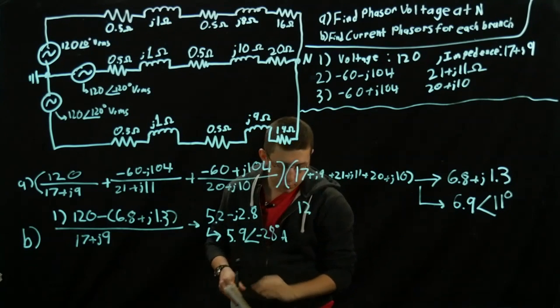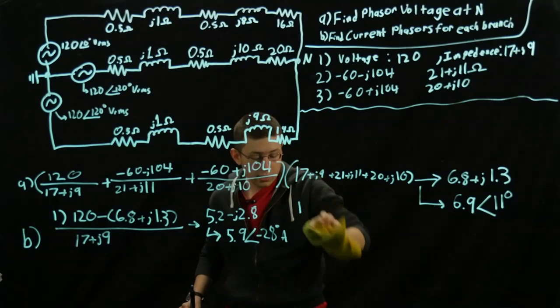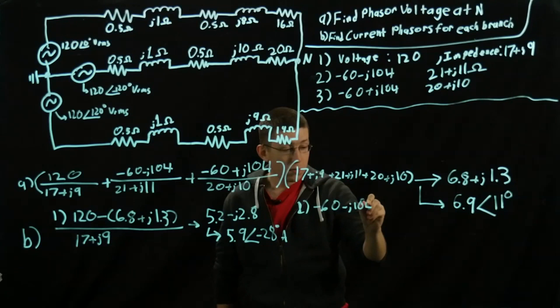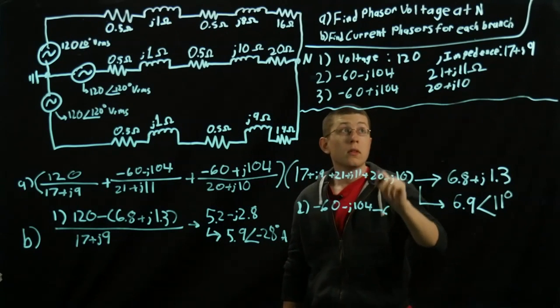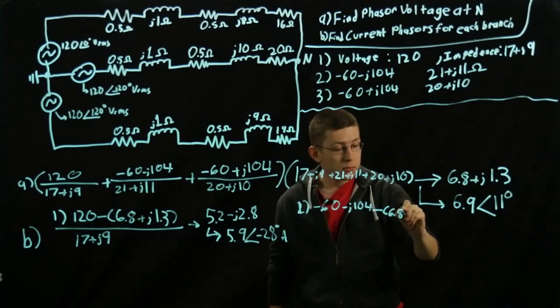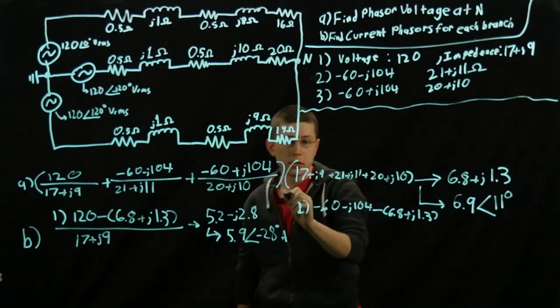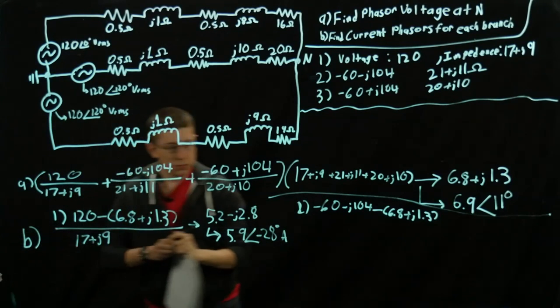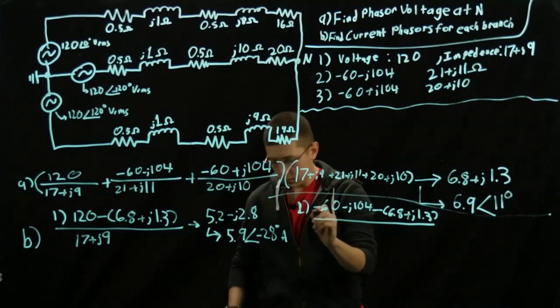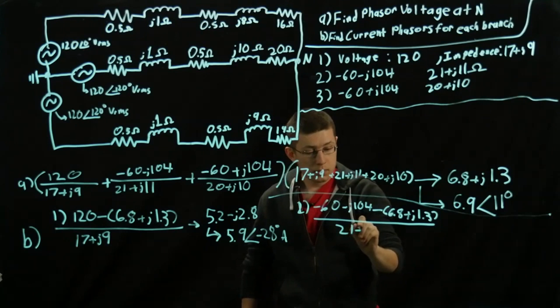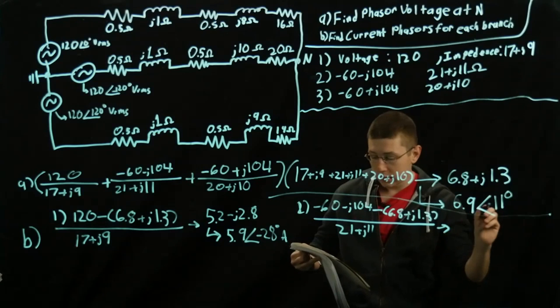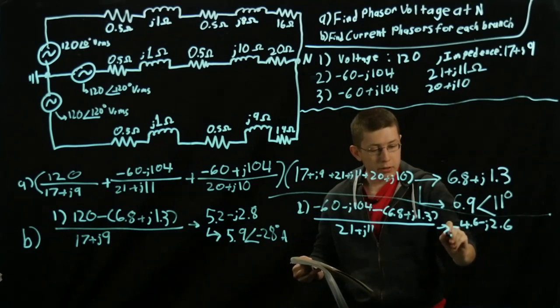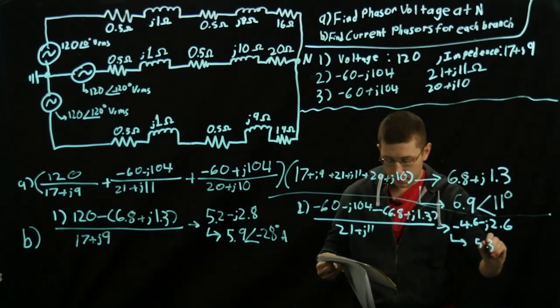So the second one, it's the same exact process where you just do the first voltage minus the second all over the impedance. So it'll be negative 60 minus J104 minus the quantity of 6.8 plus J1.3 over 21 plus J11. And again, once you've done one phase, you pretty much know exactly how to do the rest. It's the same exact method. Same as before, I'm just going to do our conversion back to polar at 5.3 at negative 151.